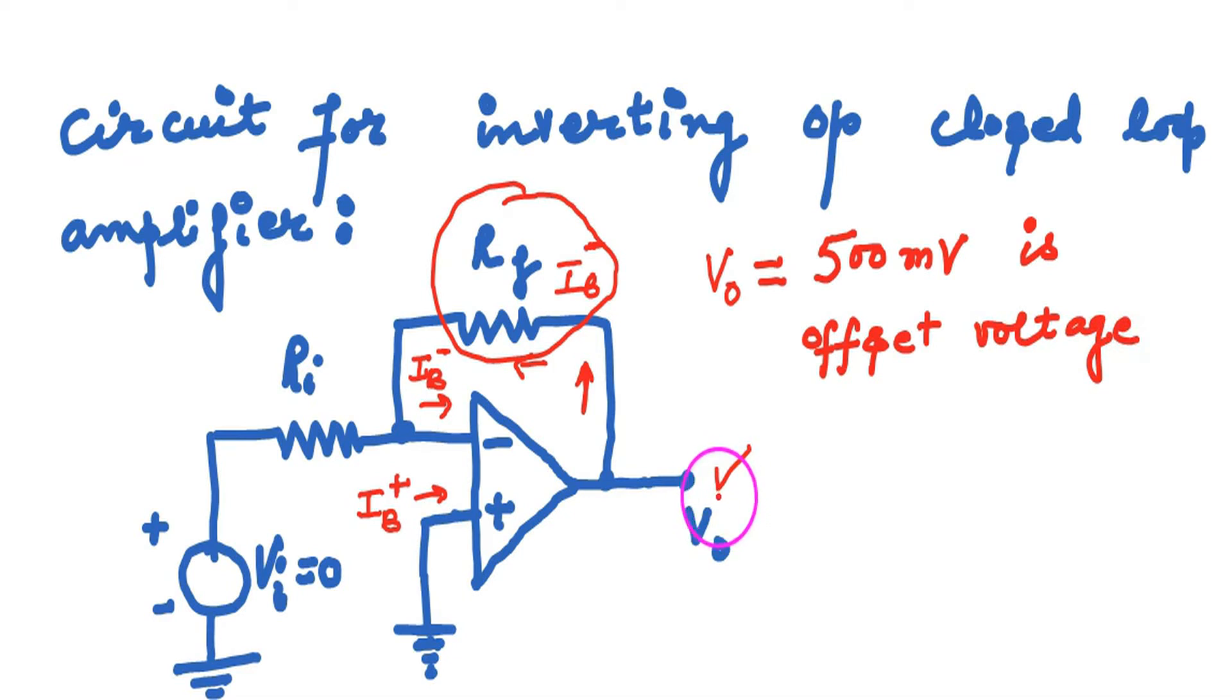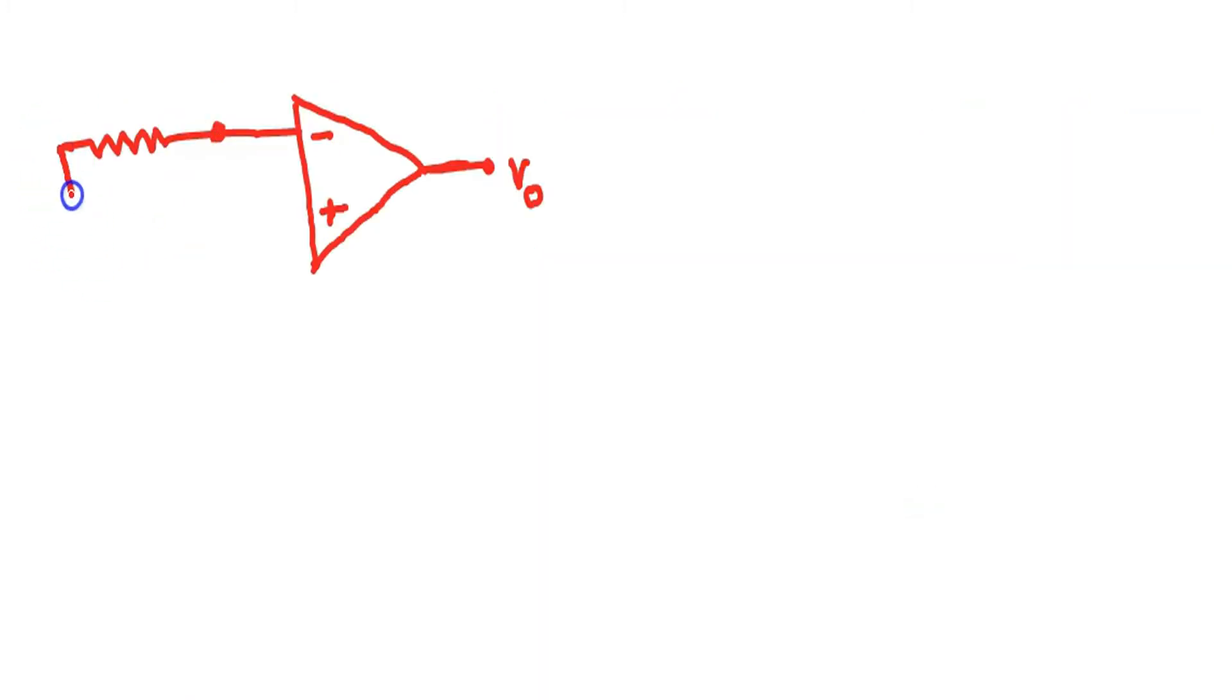The question is now how we make the output voltage equal to zero, i.e., offset compensation. This circuit is for inverting amplifier because input voltage, no doubt it is zero, but it is shown at the minus terminal VI which is zero shown at the negative terminal. For offset compensation, RC resistor is connected at the non-inverting terminal for compensation.